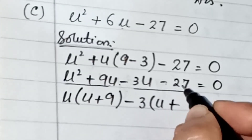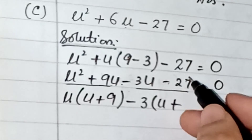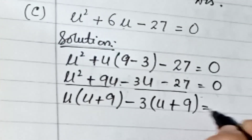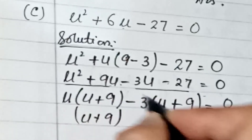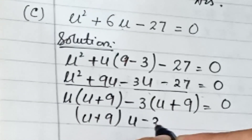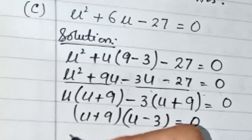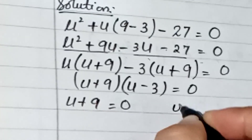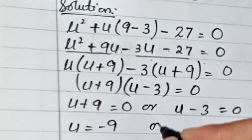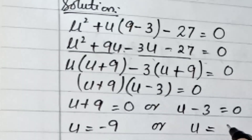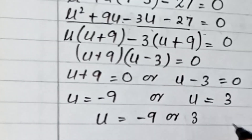Take common factors between the two pairs. From the first pair, take u as common and we are left with u and 9. From the second pair, take minus 3 as common: minus minus gives plus, so we are left with u and 9. These two brackets are exactly the same. Write the bracket once — u plus 9 — and the second bracket is u minus 3. Equating both with 0: u plus 9 equals 0 or u minus 3 equals 0, giving u equals minus 9 or u equals 3. This is our answer.